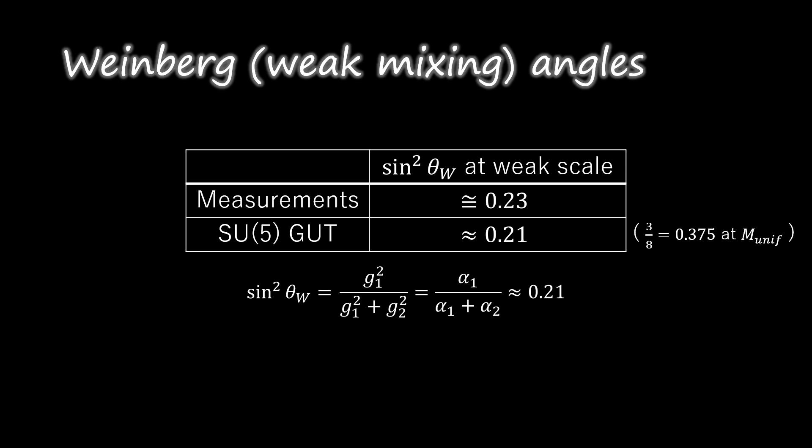Then to see what sin²θw is at the weak scale, we have to express sin²θw in terms of the couplings. The SU5 prediction is that sin²θw equals 3/8. We see that sin²θw has changed from 3/8 at the unification scale to about 0.21 at the weak scale.